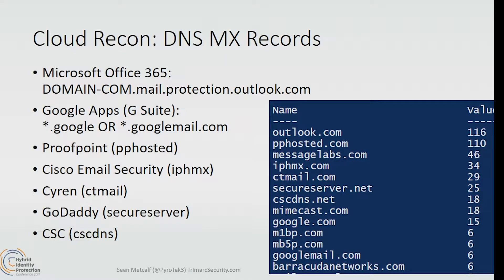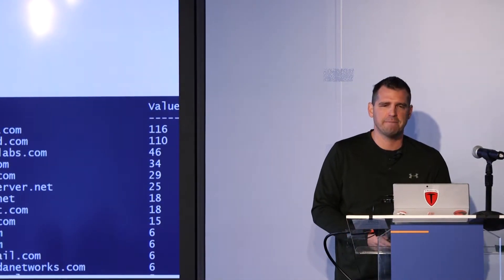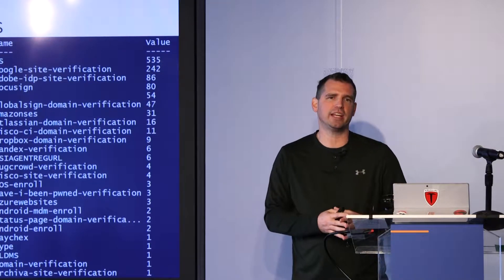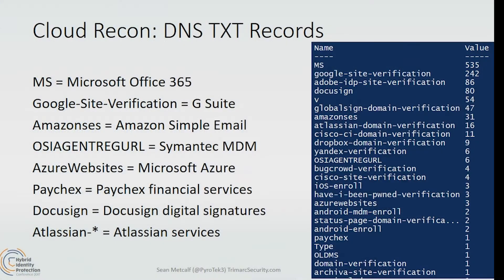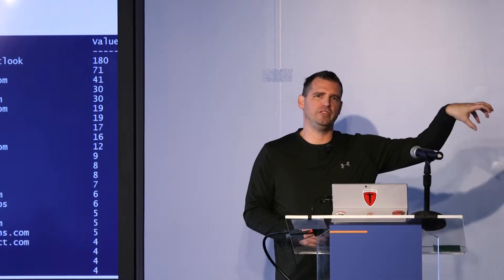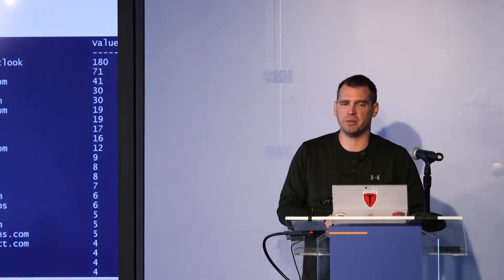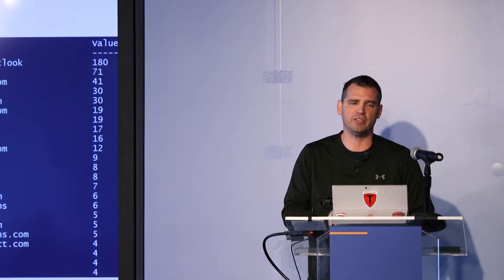That's pretty interesting if you're attempting a spear phishing attack because it gives you an idea of what email security capabilities they may have. There are also DNS text records — by looking at these I can identify what cloud provider someone is using. Microsoft Office 365 will have an MS text record, Google Site Verification, Amazon SES, and others like Symantec MDM, Microsoft Azure websites, Paychex, DocuSign, and Atlassian. These are ways that a cloud service provider can prove that you own that domain, and they tend to persist for a very long time. We can also look at SPF records — the email security records specifying what servers are authorized to send email for a corporate domain — revealing which cloud providers an organization is using, like Salesforce, Mailchimp, and others.